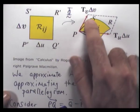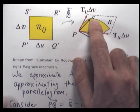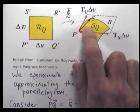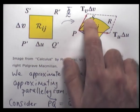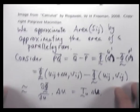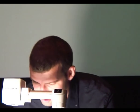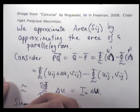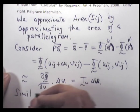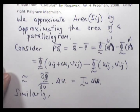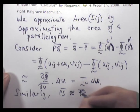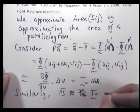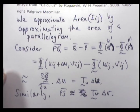Let's think about the other vector, PS. You can go through the same motion and get a first-order approximation for the vector PS. It's approximately equal to T_V times delta-V.